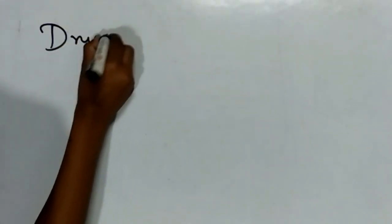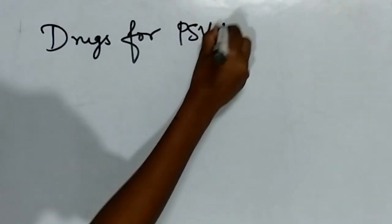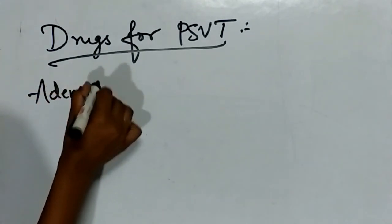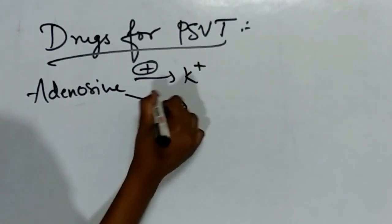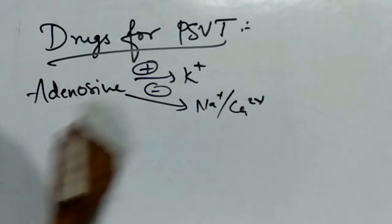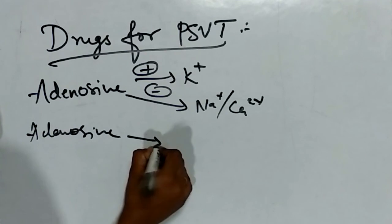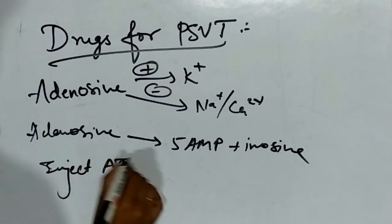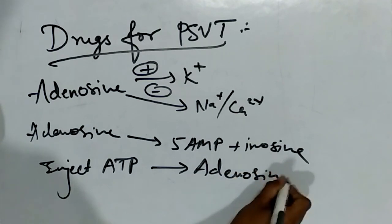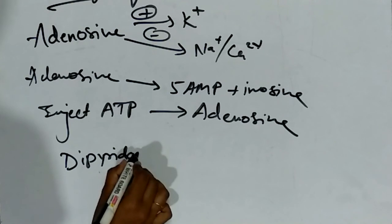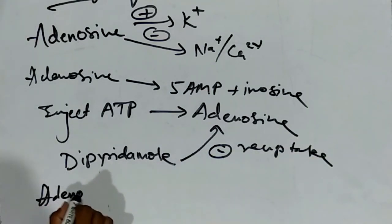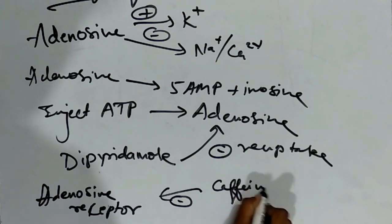What are the drugs for treatment of PSVT, post supraventricular tachycardia? The first drug is adenosine. It stimulates potassium channels and inhibits sodium and calcium channels. Adenosine is formed by 5-AMP plus inosine. If we inject ATP in blood, it will convert into adenosine. Dipyridamole is a class 1A drug which inhibits reuptake of adenosine. Adenosine receptors are blocked by caffeine and theophylline.